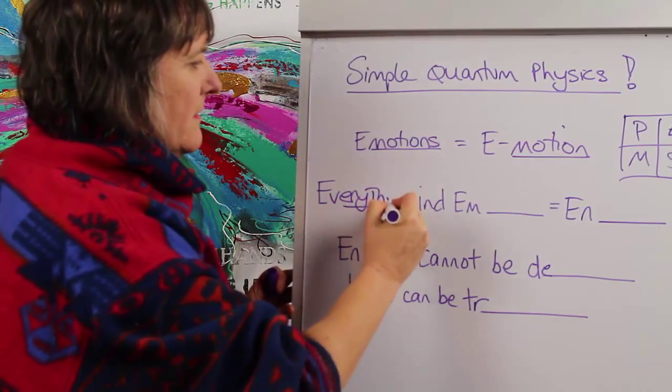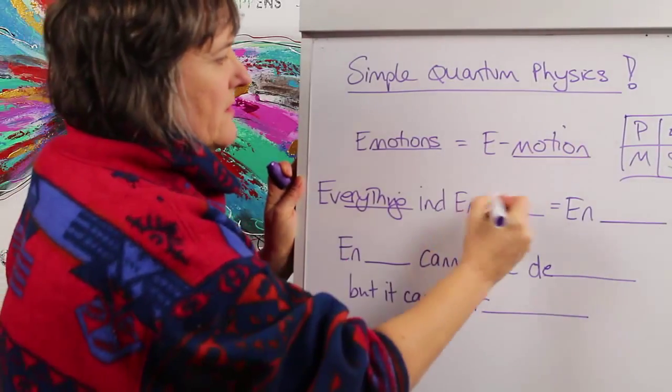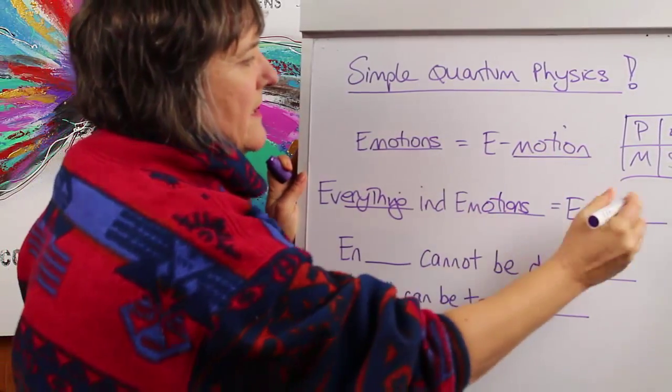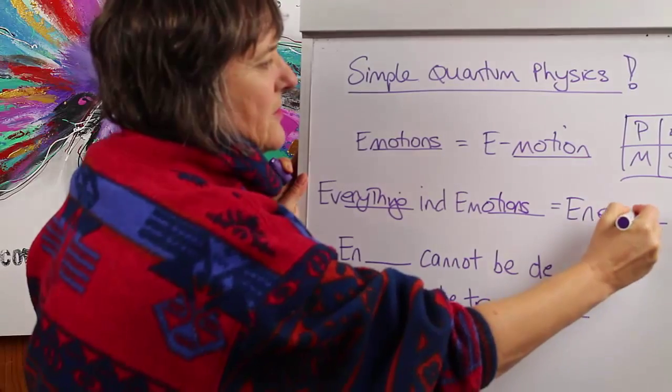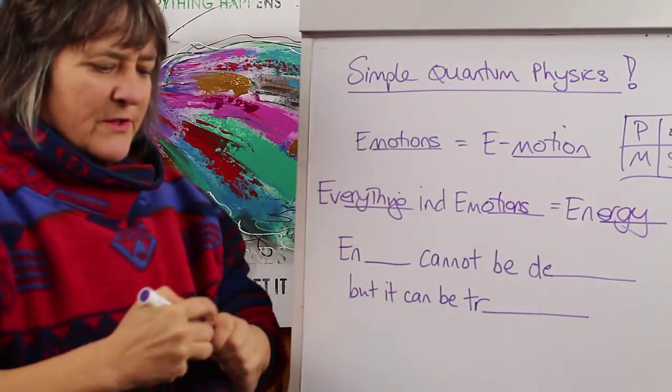What science has now proven beyond a shadow of a doubt is that actually everything is energy. So everything, including emotions, because emotions are also a form of energy, everything is energy.